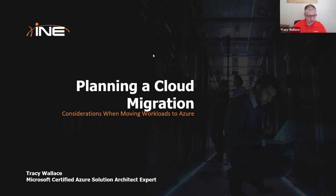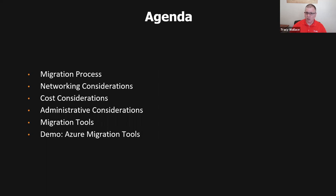So without further ado, let's jump in. The agenda has six things. We're going to talk about the migration process — not so much the how, but the why. What do you go through at the big picture project level as far as the migration process? And then what I've seen to be typically the biggest area of consideration when migrating workloads into the cloud — which in my case will be Azure — and that's networking considerations.